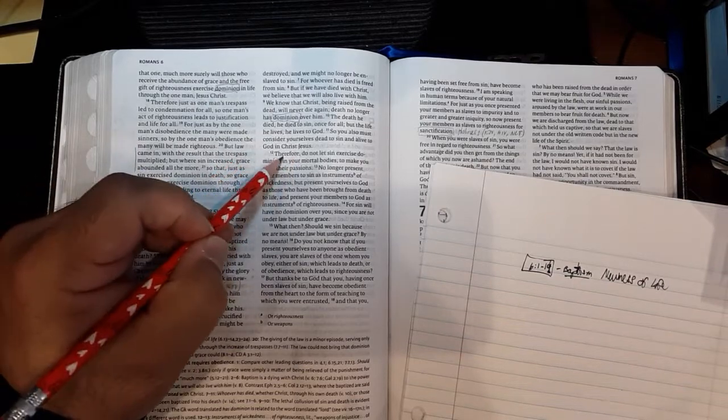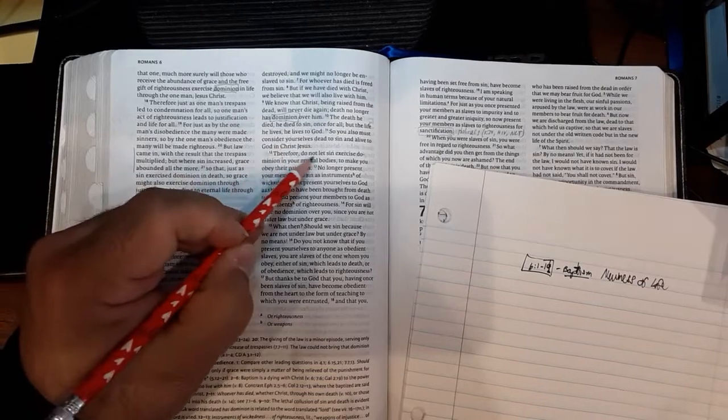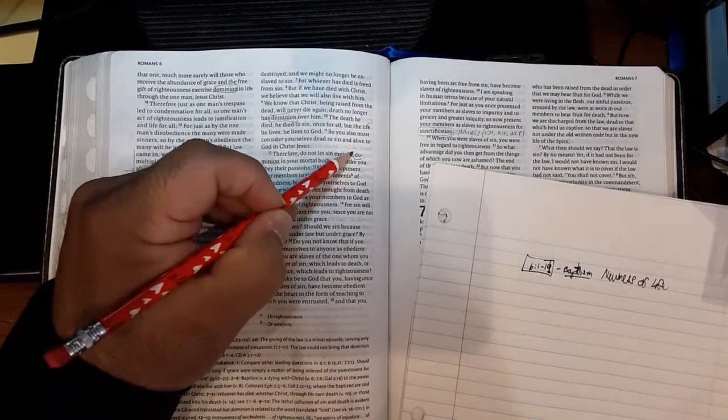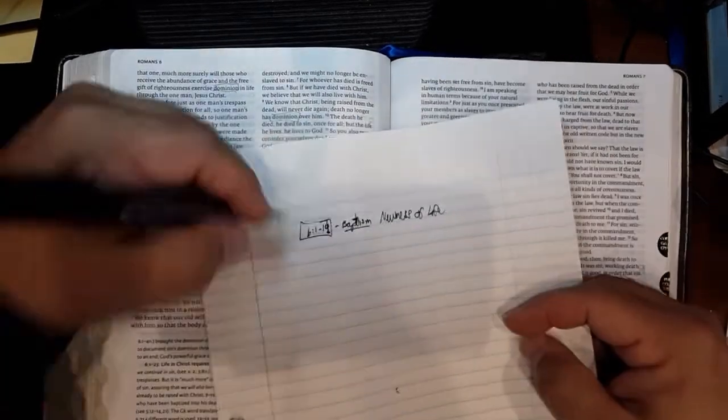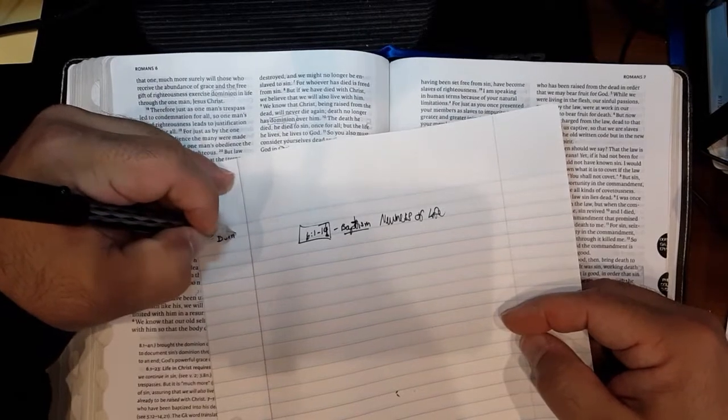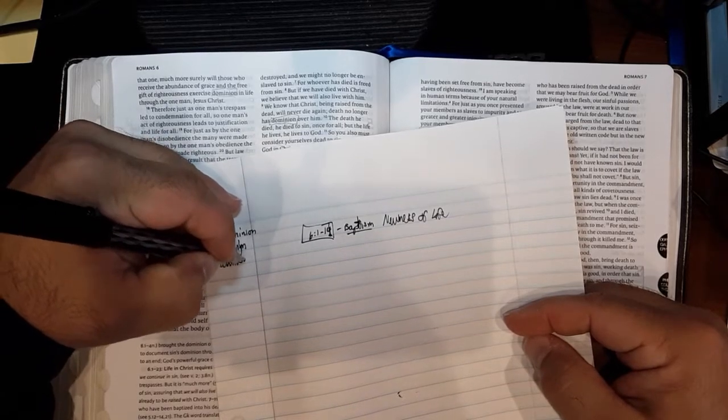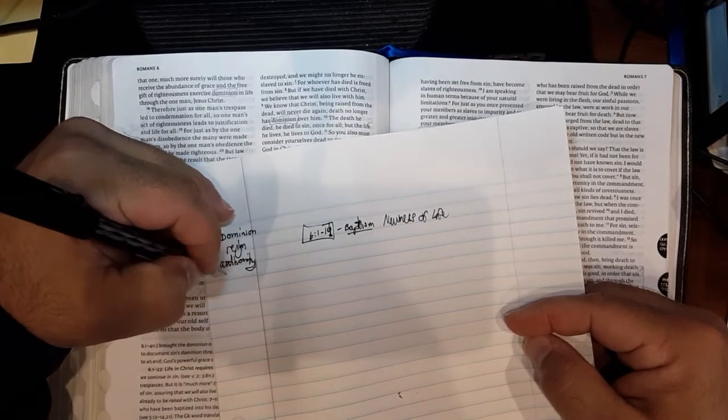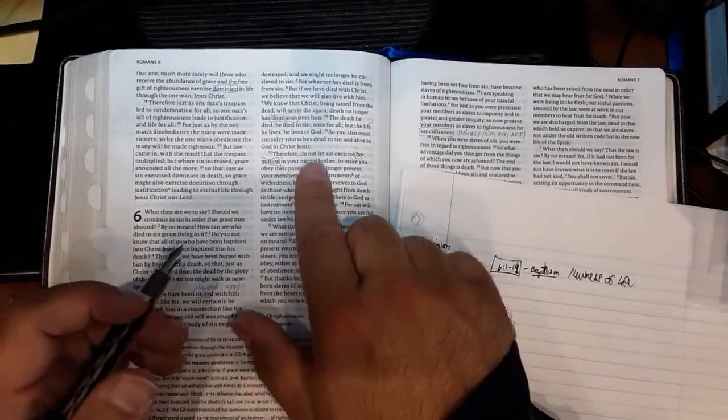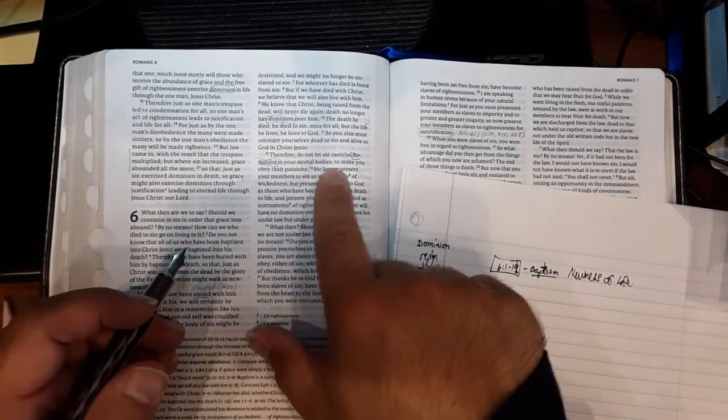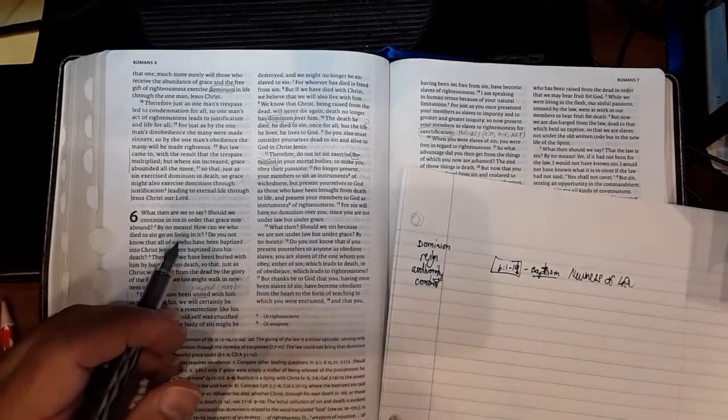Therefore, meaning what's there before the therefore, as a consequence of this, do not let sin exercise dominion. There's that word again. If you write in your Bibles, you may want to underline all these words. If you look in your translations, some have it as dominion, some have it as reign, some have it as authority. Some have it as control. I think that's the NIV. Whatever it is, these words are in the same family of that warfare. Do not let sin exercise dominion in your mortal bodies to make you obey their passions.